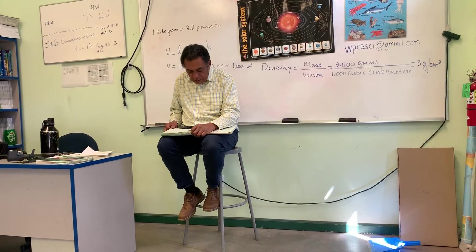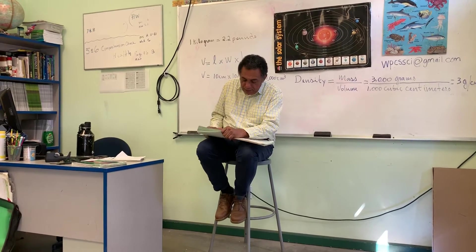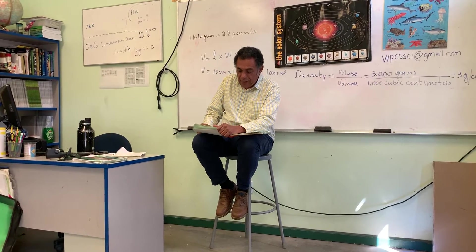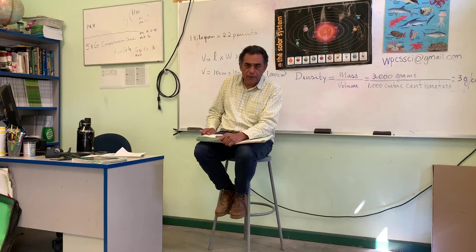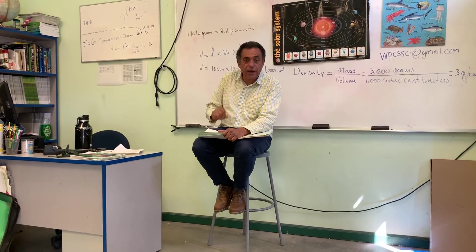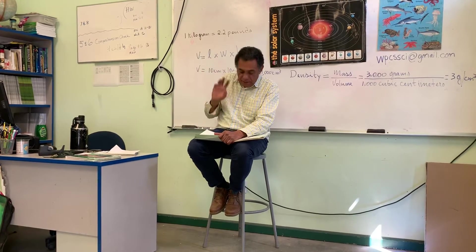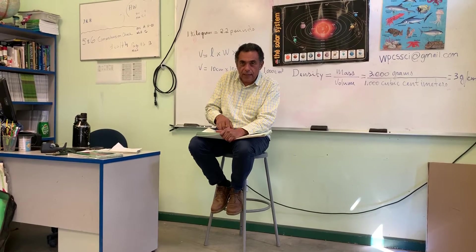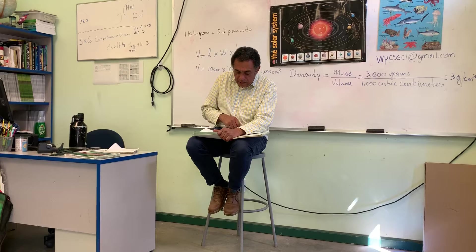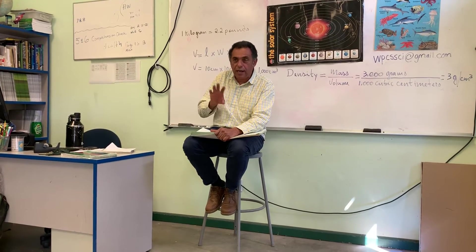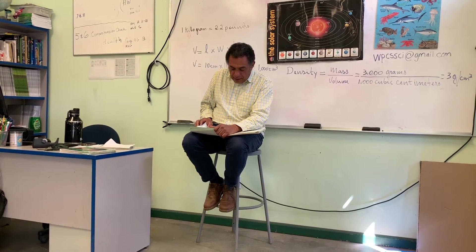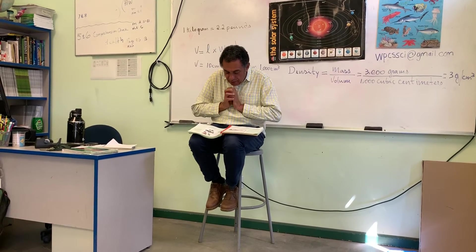One important thing about the bee is the eyes. They have simple eyes and compound eyes. The compound eyes are divided into thousands of tiny parts so they can see everywhere. They also have simple eyes on the top that allow some vision. Together, these eyes allow the bee to see beside, in front, and above.